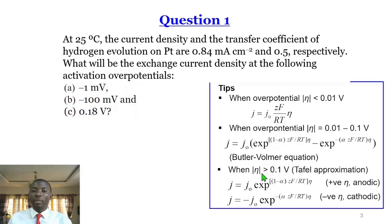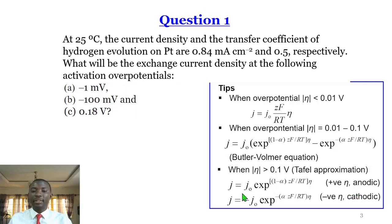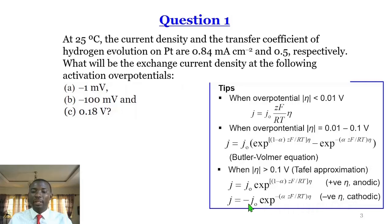However, when the absolute value is greater than 0.1, the Tafel approximation applies. For the Tafel approximation, when the overpotential is positive, the process is anodic and this form of the expression applies. When the overpotential is negative, the process is cathodic and this form of the equation applies.